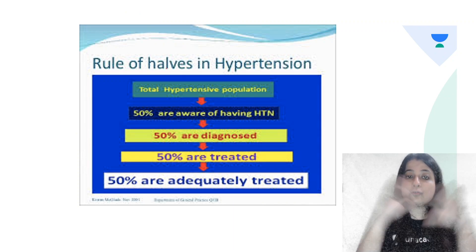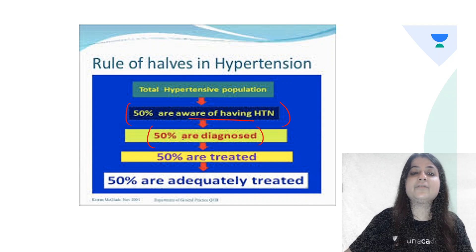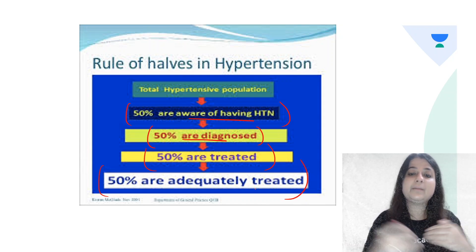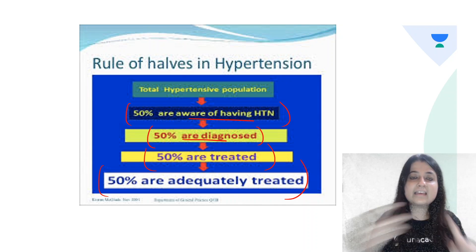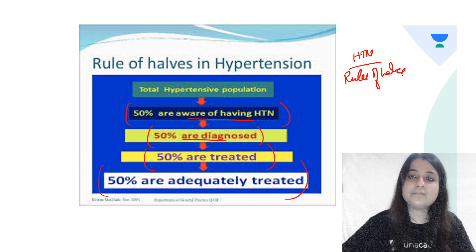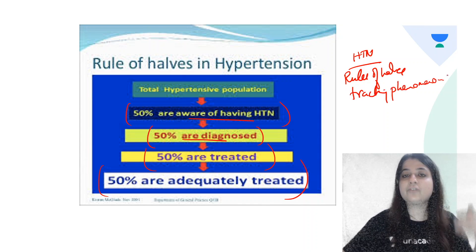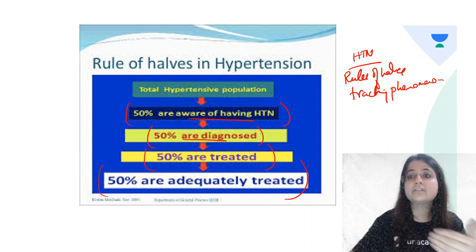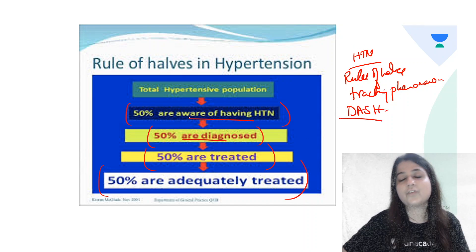The rule of halves states that out of the total hypertensive population, 50% are aware of having hypertension. Out of them, only 50% are diagnosed. Out of them, only 50% are treated. And out of those 50% treated, only 50% are adequately treated. For hypertension, you must know three things: rule of halves, tracking phenomenon — where BP tracked from childhood remains low or high into adulthood — and DASH: dietary approach to stop hypertension.